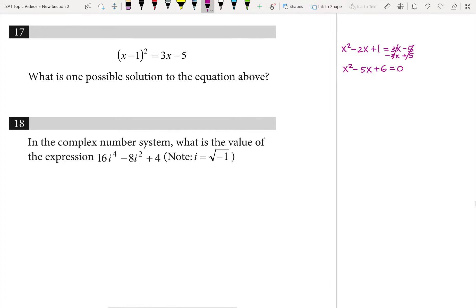And that's equal to 0. And it's just a matter of factoring from there. What multiplies to 6 and adds to negative 5? Well, that'd be x minus 3, x minus 2. So we get two answers here, positive 2 or 3. You can pick either one for your answer to grid in on the SAT.